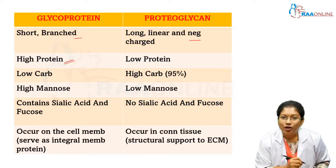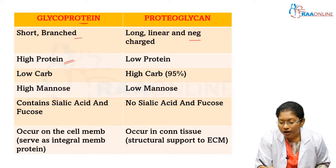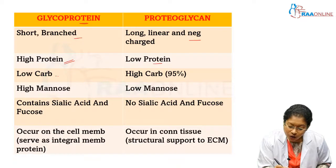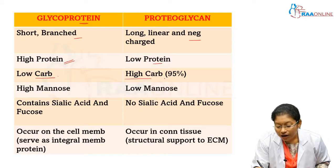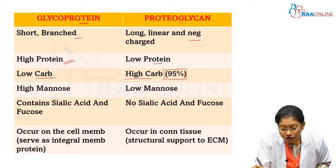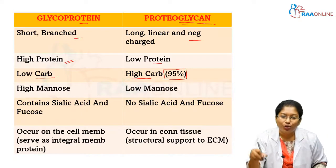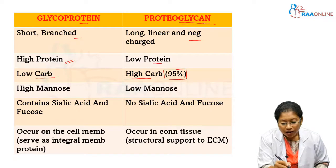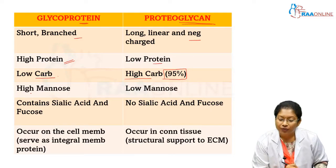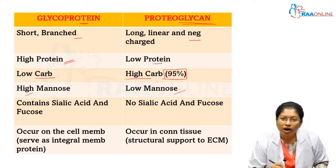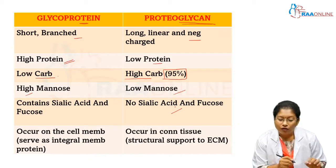There is an enormous amount of negative charge present in proteoglycan. Glycoprotein has high protein content because it ends with 'protein,' so the protein content is high there, while carbohydrate is low. Proteoglycan has high carbohydrate — nearly 95% — because it ends with 'glycan,' meaning high carbohydrate is present. Proteoglycan contains low mannose and no sialic acid and fucose. This is because of its function.